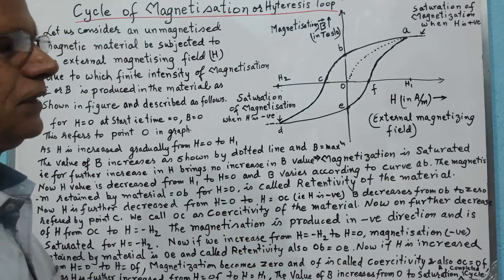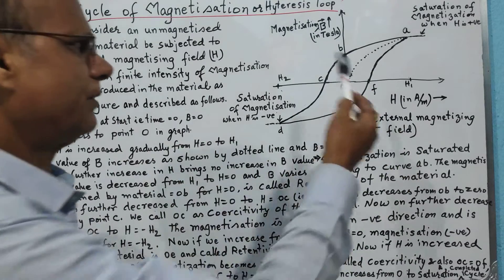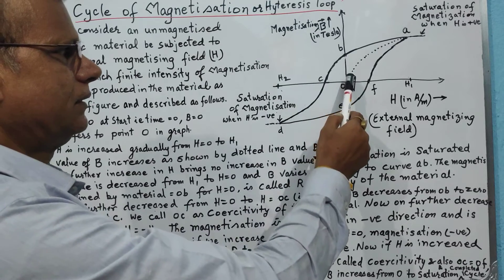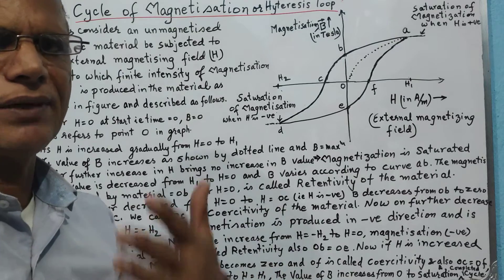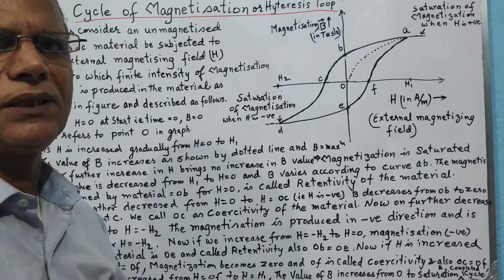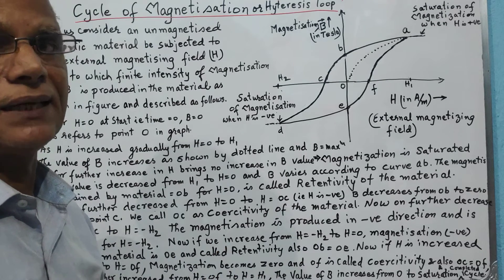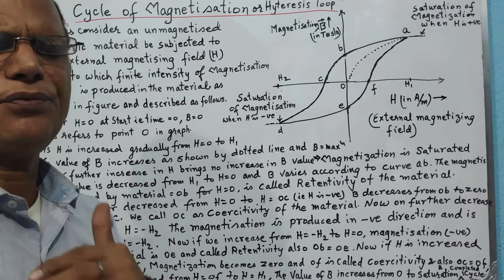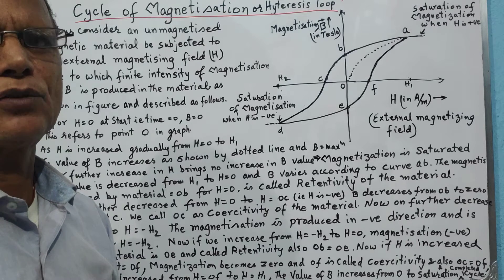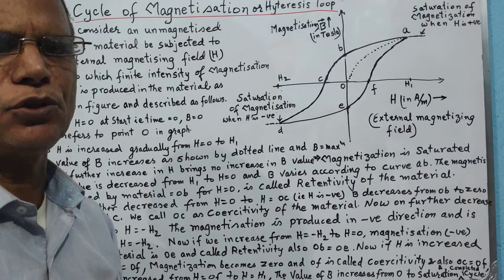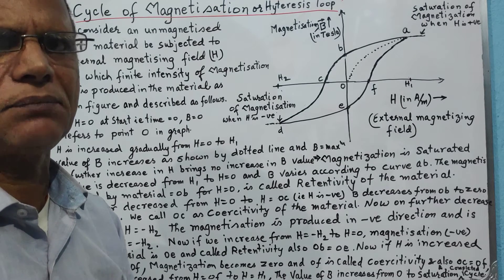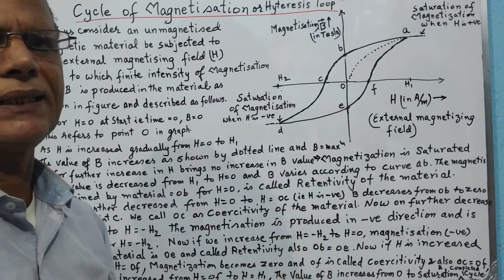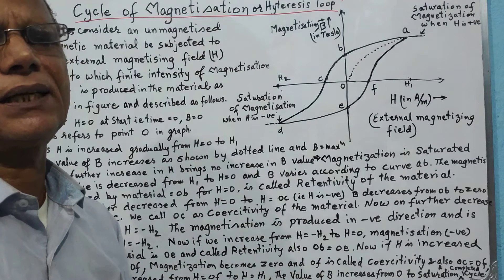When the external magnetizing field is increased gradually from 0 to a maximum value H1, the intensity of magnetization increases in the material as shown by the dotted line. The magnetization increases but becomes saturated after a certain point — because once all elementary magnetic dipoles are arranged in one direction, and due to thermal energy some may not align, no further increase in intensity of magnetization occurs even if the external magnetizing field is increased.